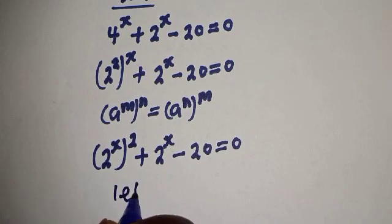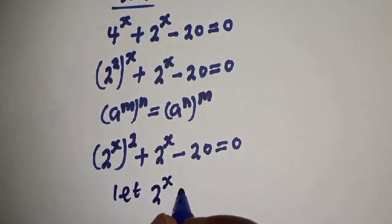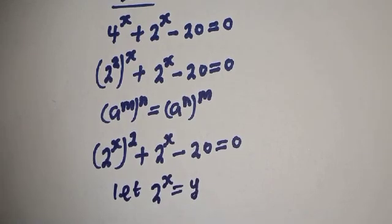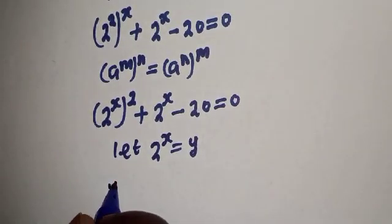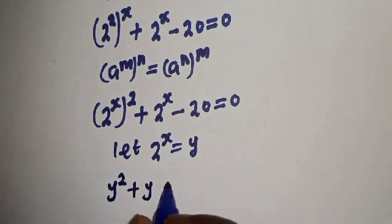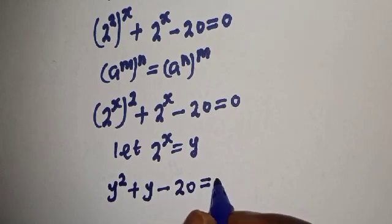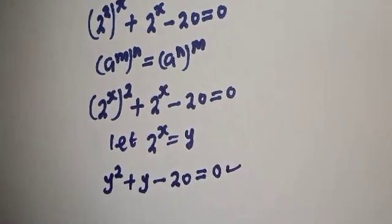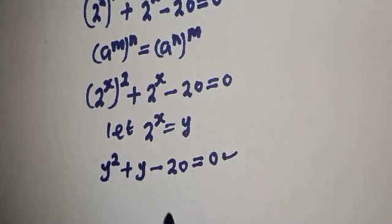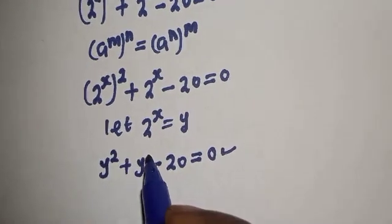Let 2 raised to power x be equal to y. Then y squared plus y minus 20 is equal to 0. So this is a quadratic equation.